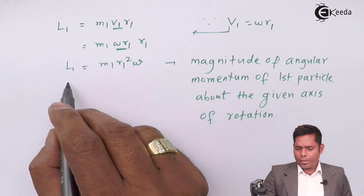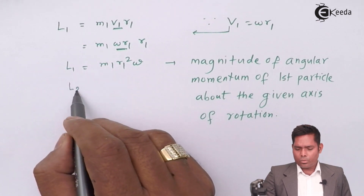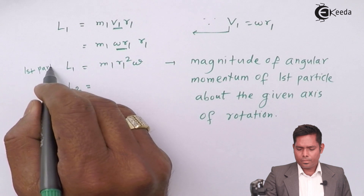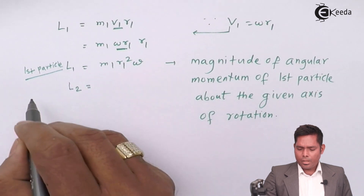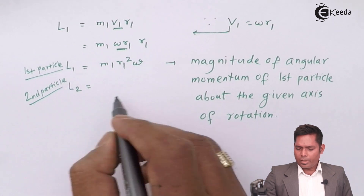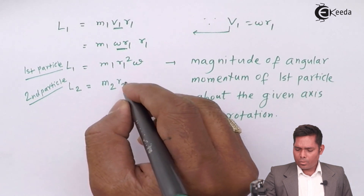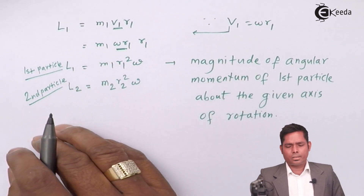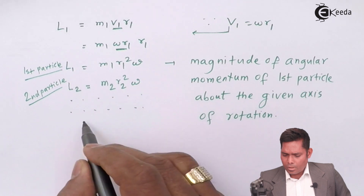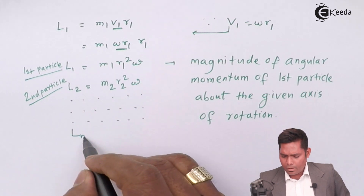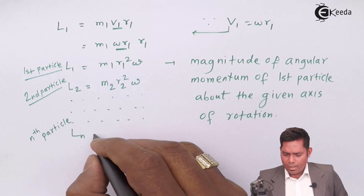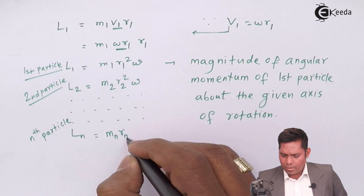Similarly, the angular momentum for the second particle L2 equals M2 times R2 squared times omega. Omega remains the same for all particles — it is constant. For the last particle, Ln equals Mn times Rn squared times omega.